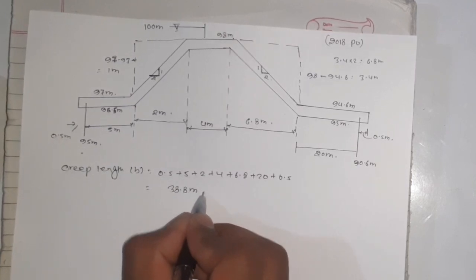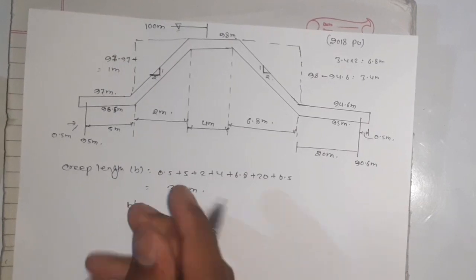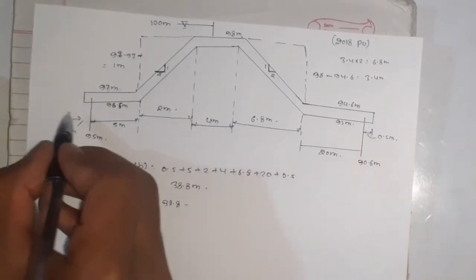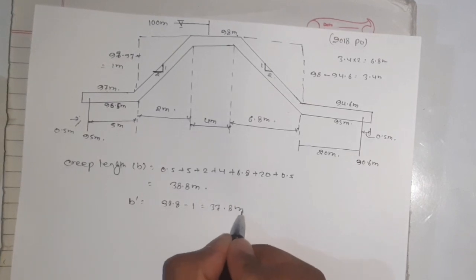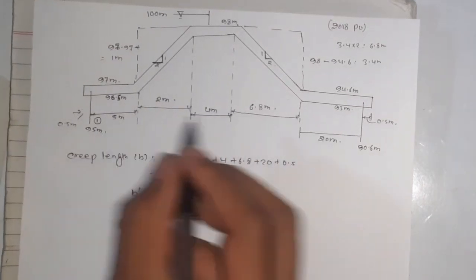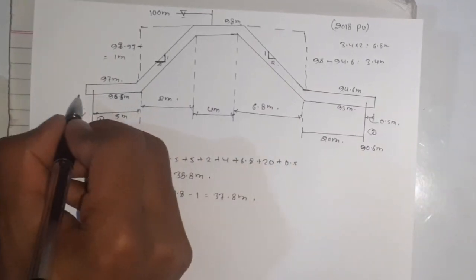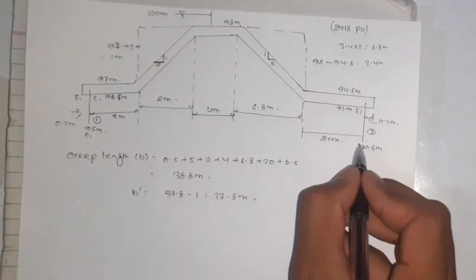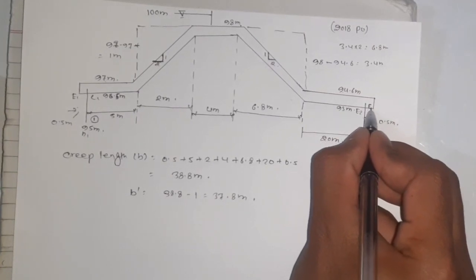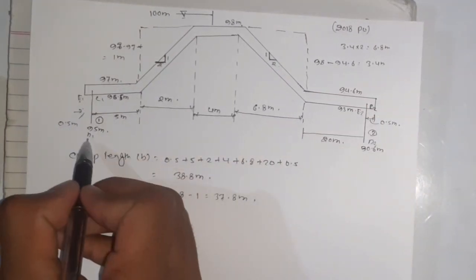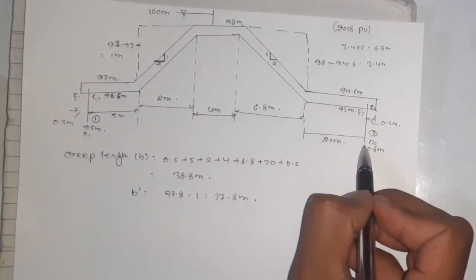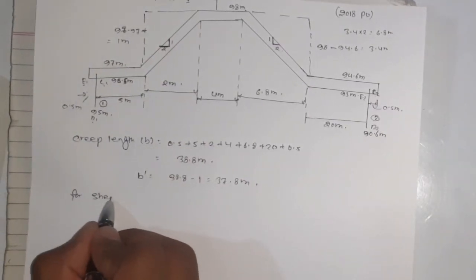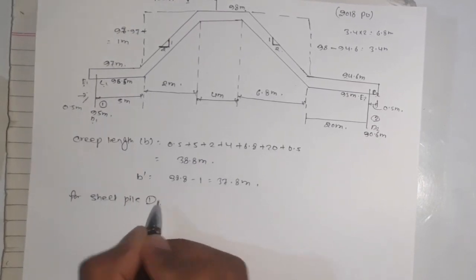Creep length B is very simple: 0.5 plus 5 plus 4 plus 6.8 plus 20 plus 0.5 equals 36.8 meters. So for sheet pile one...